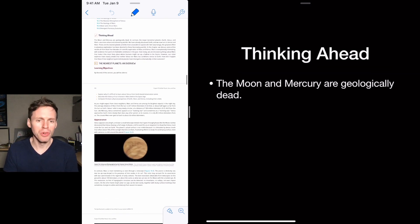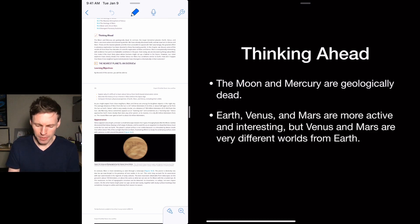If you think about the Moon and Mercury, they're geologically dead. There isn't a lot going on there. Not a lot of progress being made. They're covered in craters. So we don't see any evidence of their craters being erased over time. Earth and Venus and Mars, though, they're more active, more interesting. But Venus and Mars are very different worlds from Earth.